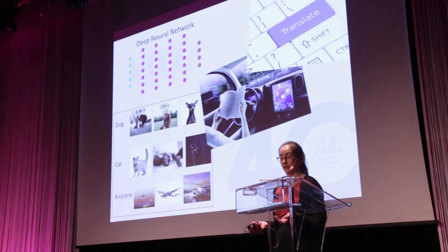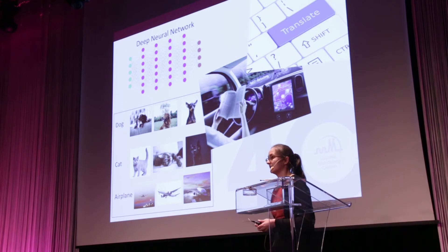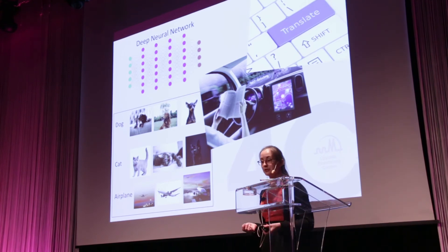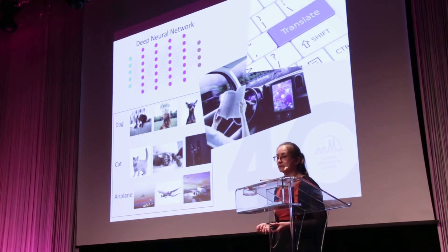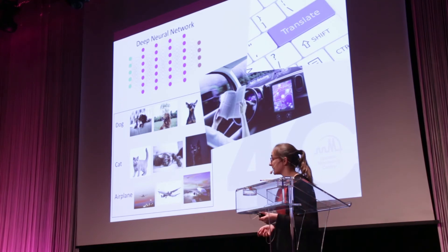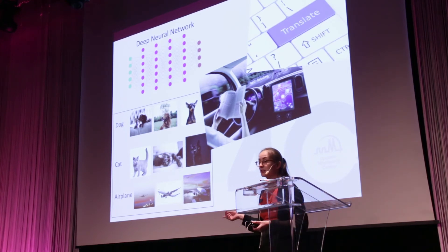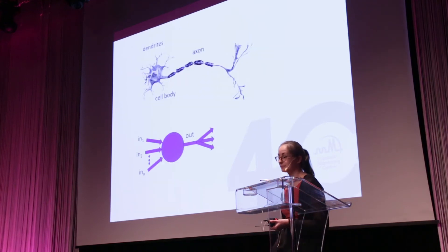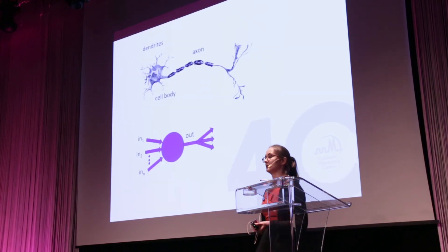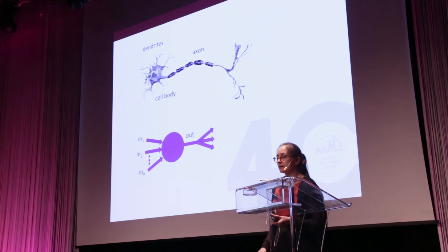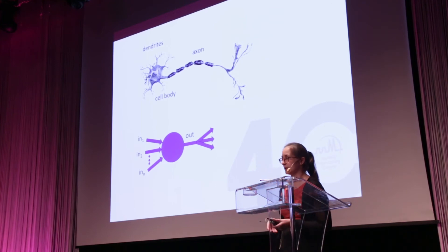This is of course a very difficult task, but in the last couple of years artificial neural networks have revolutionized the ways in which computers solve problems — for example in image classification, autonomous driving, and machine translation. Artificial neural networks are inspired by our brain; they try to model the brain's neural network.